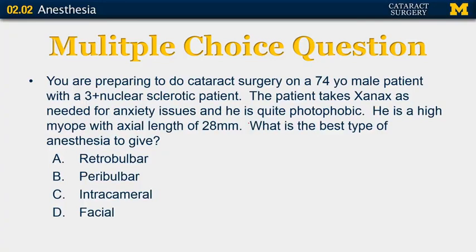Here is a final question. You are preparing to do cataract surgery on a 74-year-old male patient with a 3-plus nucleosclerotic cataract. The patient takes Xanax as needed for anxiety issues and is quite photophobic. He is a high myope with an axial length of 28 millimeters. What is the best type of anesthesia to give? A: retrobulbar block. B: peribulbar. C: intracameral. D: facial. The correct answer is B, peribulbar. You would want to avoid retrobulbar since he has a long axial length and you would risk globe perforation. Intracameral may not be enough anesthetic since he is anxious and photophobic. And facial would not provide any type of pain control.